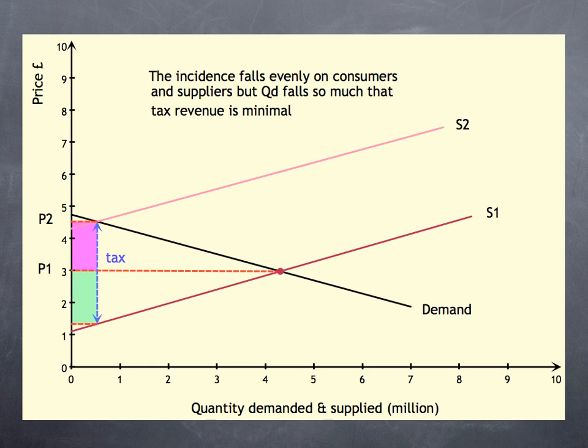Because supply and demand are so price-elastic, any price rise reduces the quantity demanded so much that hardly any tax is paid. In fact, in this case, it's only £1.5 million.